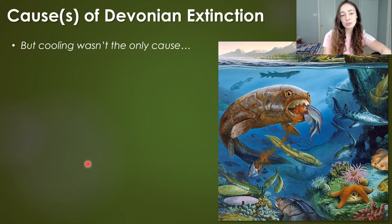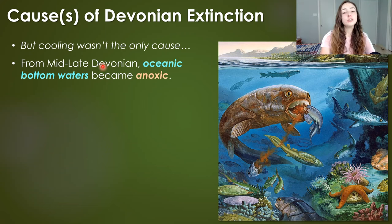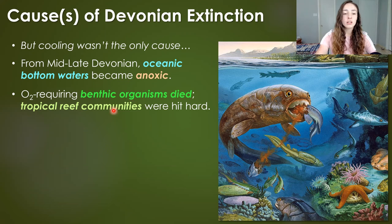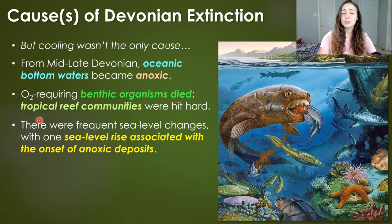But cooling was not the only cause. The mid- to late Devonian was also a time when oceanic bottom waters became anoxic — completely oxygen depleted — and oxygen-requiring benthic organisms would have died because of that. This also likely explains why tropical reef communities were hit so hard.